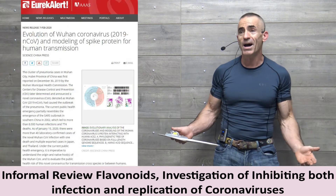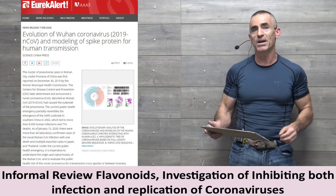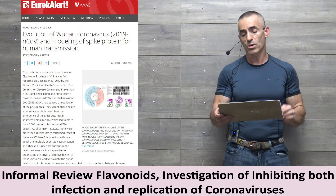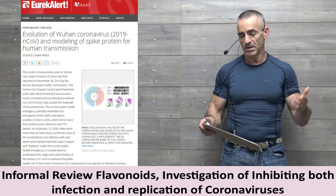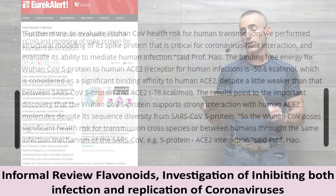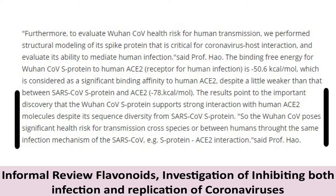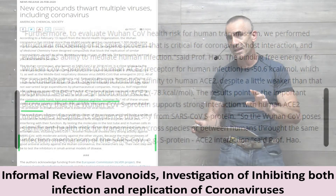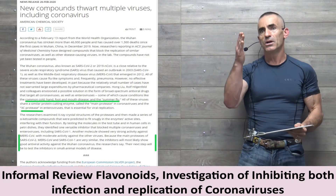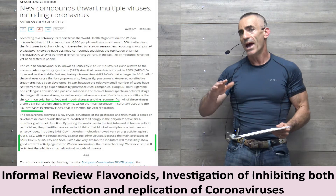There's a chance of confirmation bias, but regardless, I haven't seen anything to negate it as of yet. Study two: Evolution of Wuhan coronavirus 2019 and modeling with spike protein for human transmission. The results point to an important discovery — the Wuhan coronavirus spike protein supports strong interaction with human ACE2 molecules despite its sequence diversity from SARS-CoV. So you're identifying that ACE2 plays a role in the original coronavirus from 2002–2003 and the current one today.